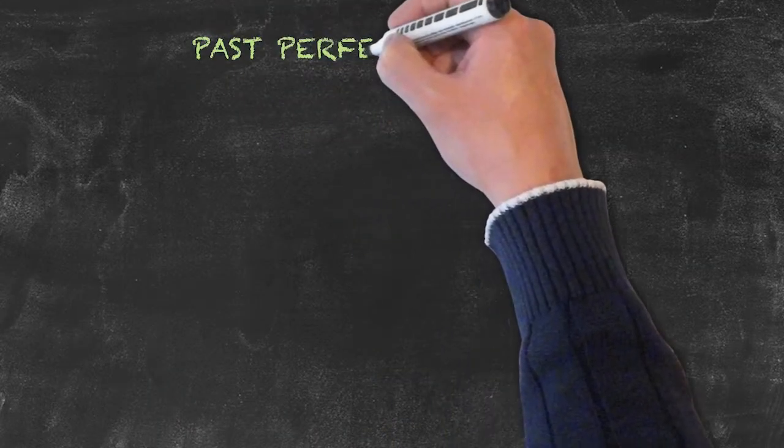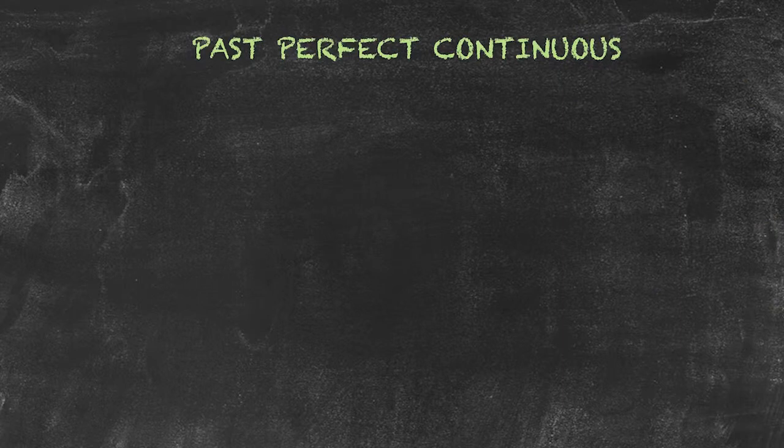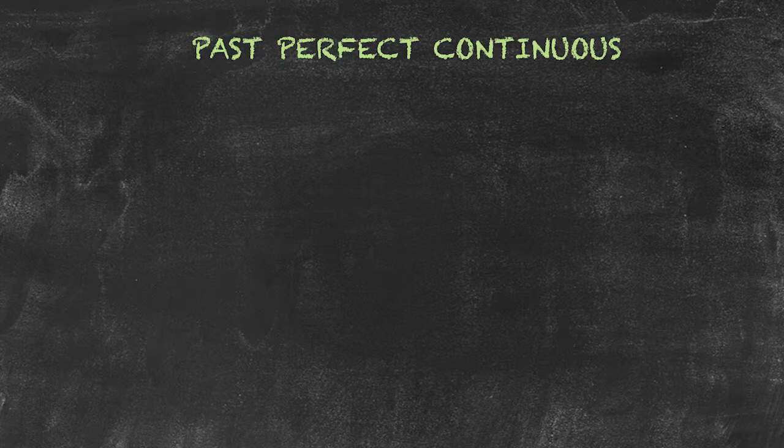And now let's take a look at the past perfect continuous tense. We'll obviously be talking about the past. We'll be talking about two actions and we'll be focusing on the fact that one of those actions had been continuing at another point in the past.